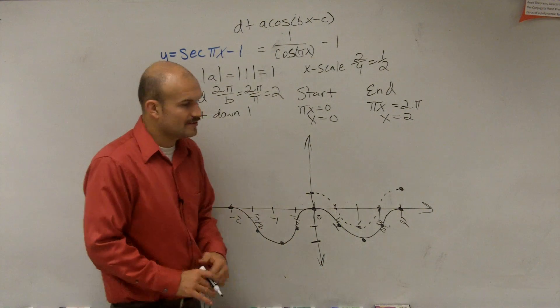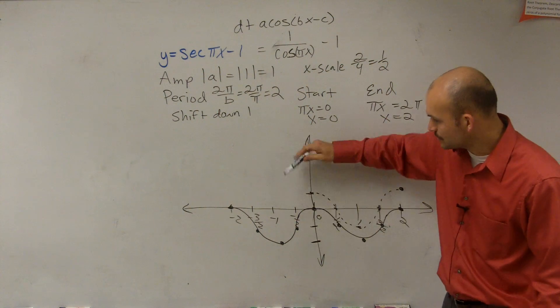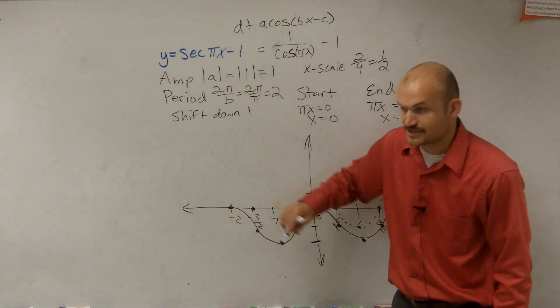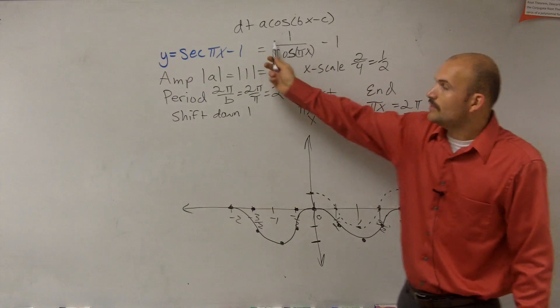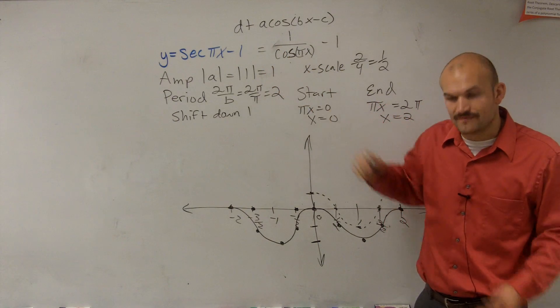So now, if you guys remember, I talked about at each one of these x-intercepts, if you were to shift this up, you'd notice that this would have been an x-intercept, and this would have been an x-intercept. At each one of those x-intercepts, we had our value equal to 0. So we had an undefined value.